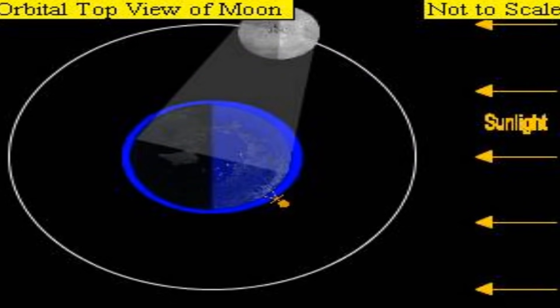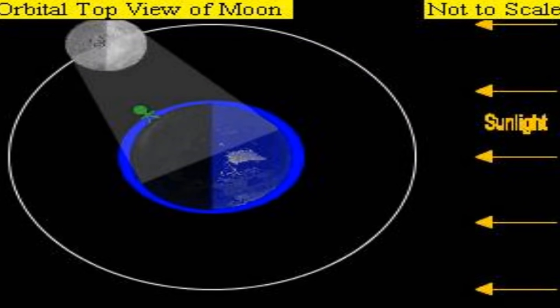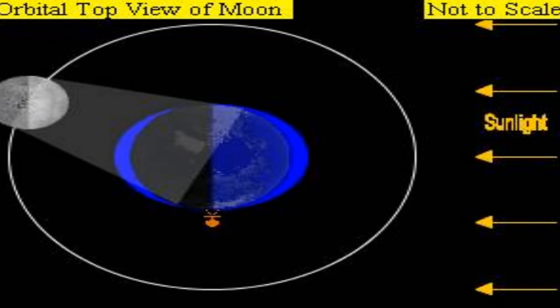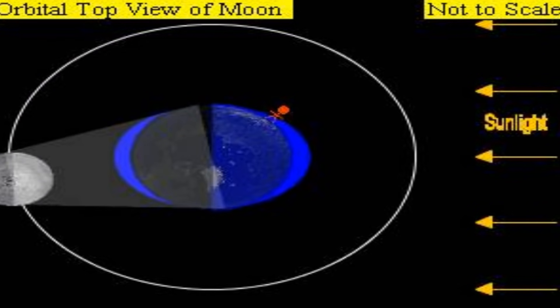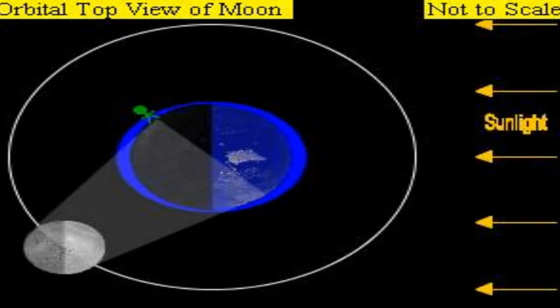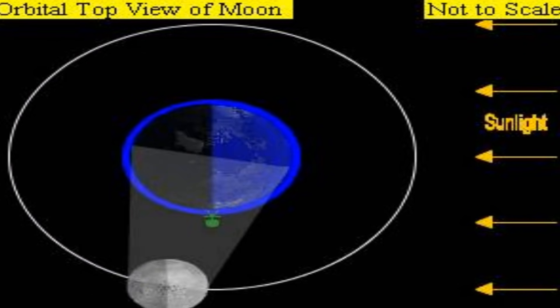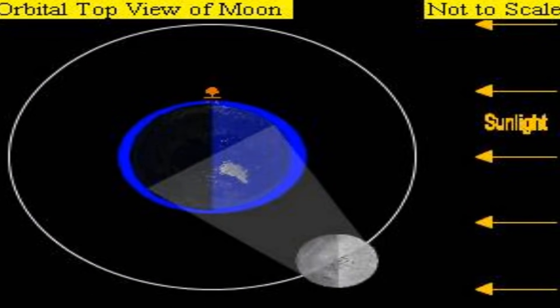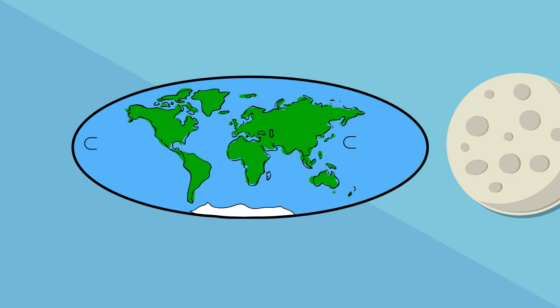The moon thus tends to stretch the earth slightly along the line connecting the earth and the moon. The solid earth deforms a bit, but the ocean water being fluid is free to move much more in response to the tidal force.